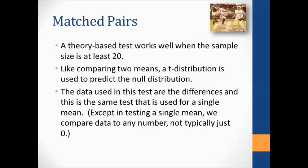For theory-based tests on matched pairs: it's still about means, so the theory-based test works well for a sample size of at least 20, as long as your distribution of differences isn't highly skewed. Just like comparing two means, a t-distribution is used to predict the shape of the null distribution. The data used in this test are the differences, and this is essentially the same test as a single mean test — for example, comparing candy bar weights against what the label says.